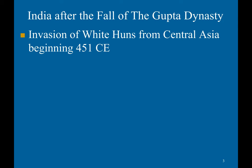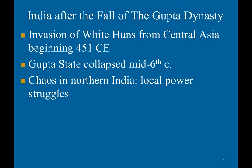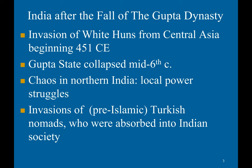The last major empire of classical India was the Gupta Dynasty, which collapsed with the invasion of the White Huns from Central Asia beginning in 451 CE, leading to the state's collapse around the mid-6th century. This led to chaos in northern India, with local powers vying against each other, and more invasions of Central Asian nomads, including pre-Islamic Turkish nomads who were later absorbed into Indian society.